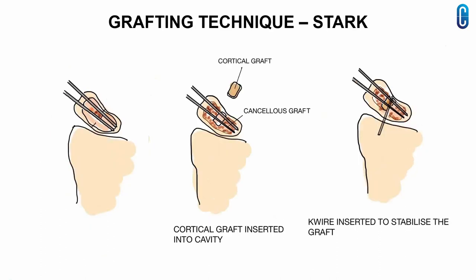In the technique described by Stark et al, after realignment and reduction of the fracture, the fragments are stabilized with K-wires. Cancellous bone graft is then packed into the cavity. Finally, a cortical graft fashioned to fit snugly in the cavity is placed and stabilized with an additional K-wire.